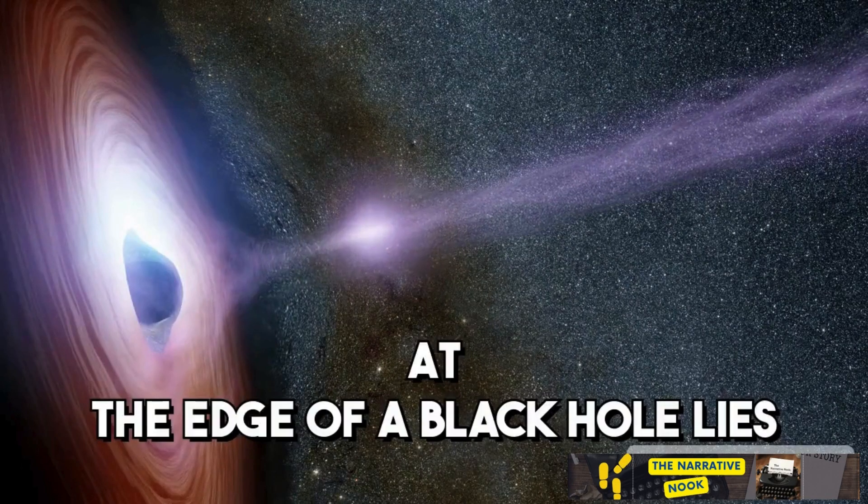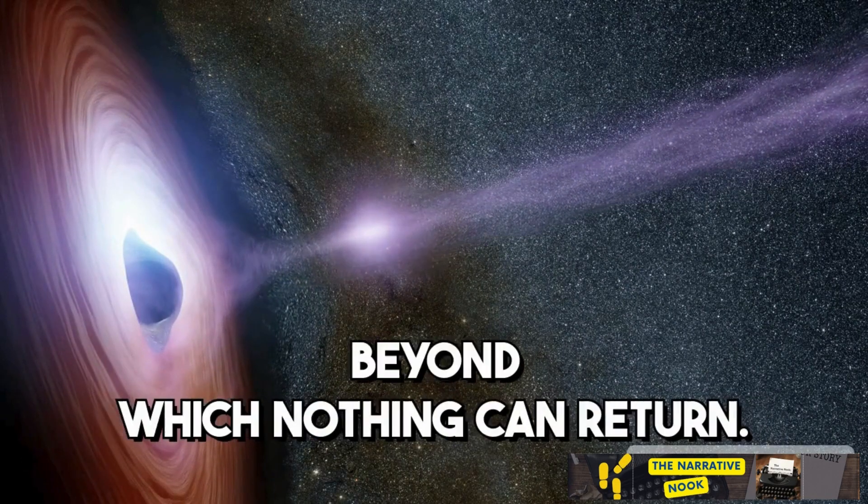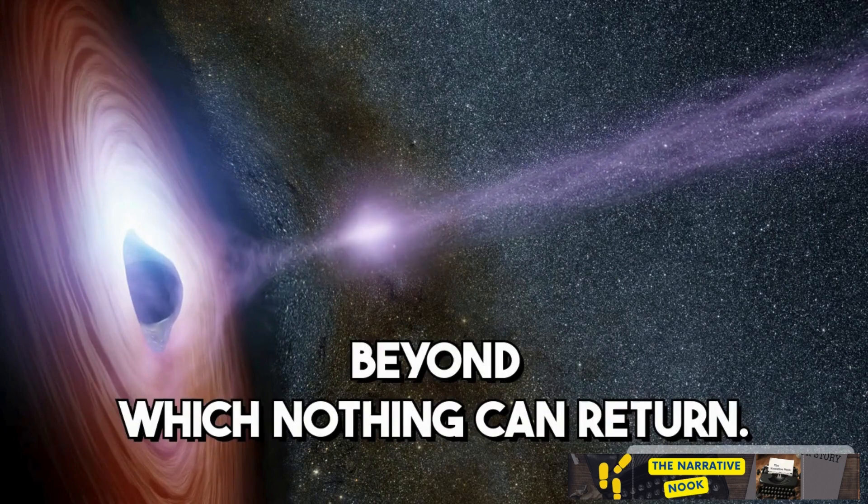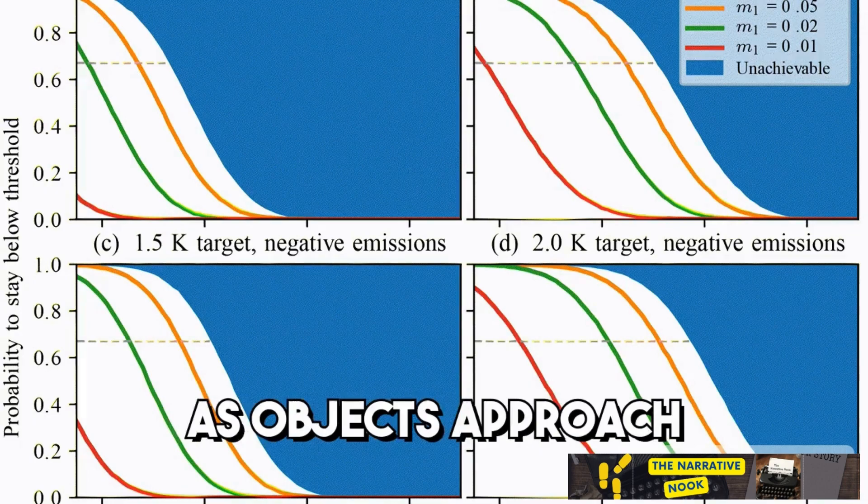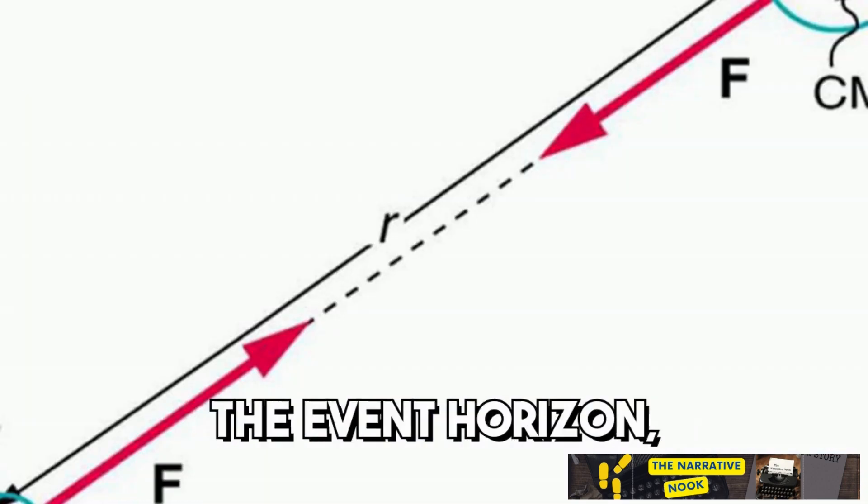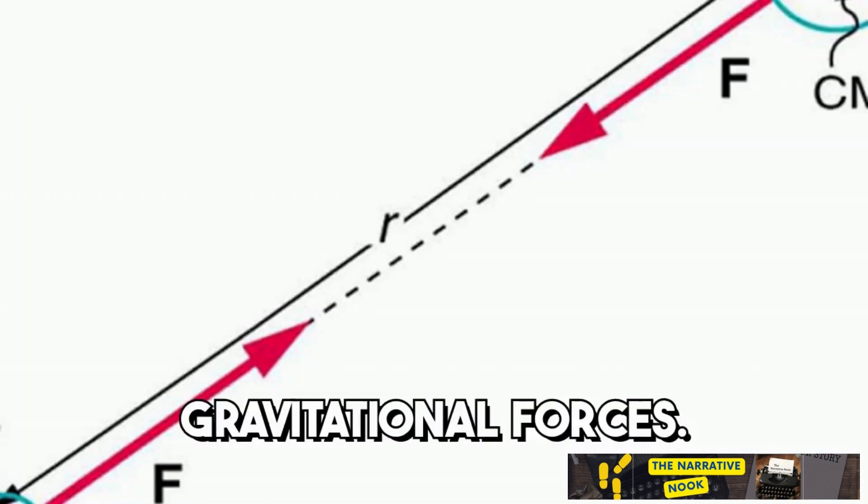At the edge of a black hole lies the event horizon, a boundary beyond which nothing can return. It's not a physical surface but a point of no return. As objects approach the event horizon, they're subjected to extreme gravitational forces.